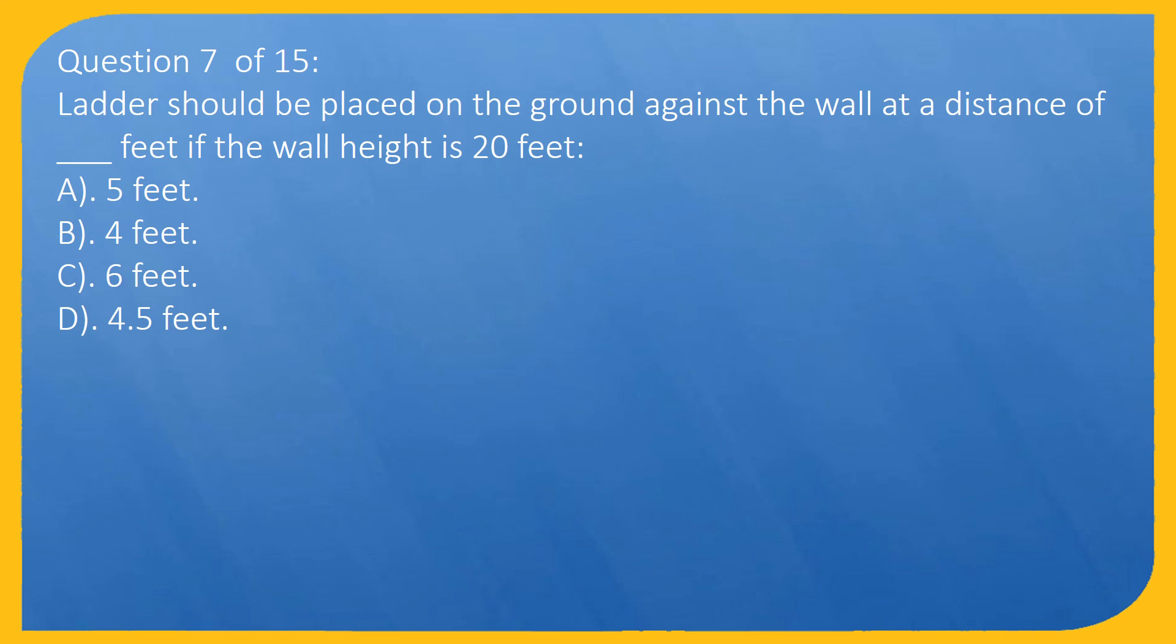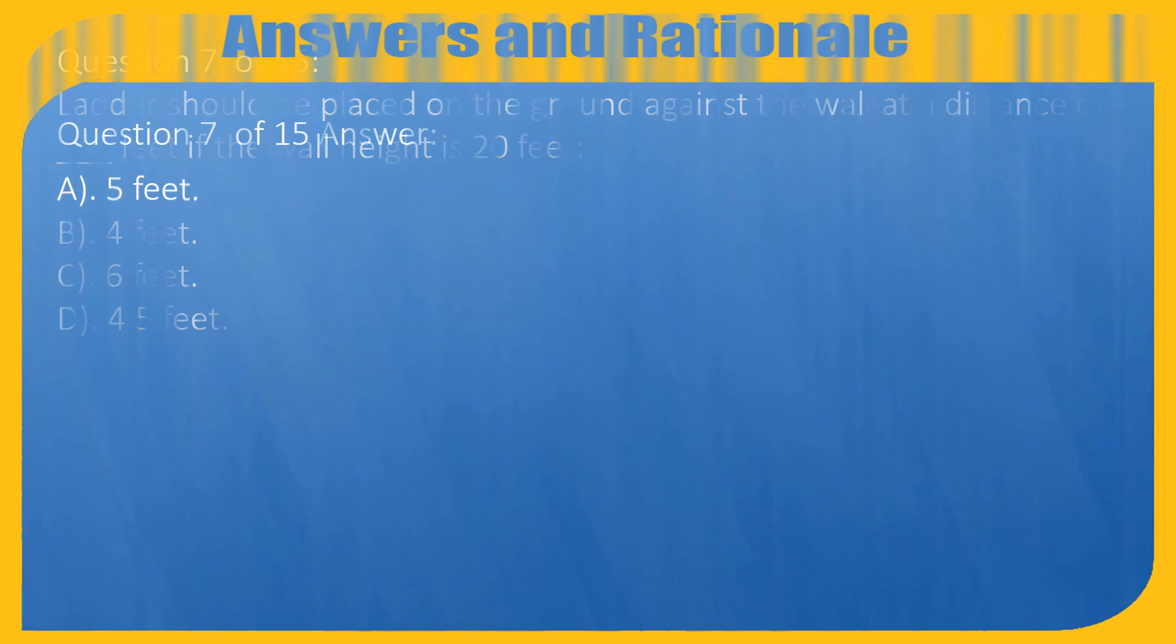Question 7 of 15: Ladder should be placed on the ground against the wall at a distance of how many feet if the wall height is 20 feet? A) 5 feet, B) 4 feet, C) 6 feet, D) 4.5 feet. Answer: A, 5 feet.